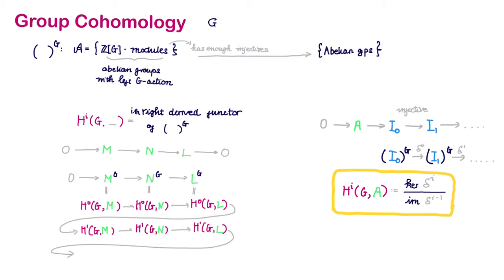Here again, it's why it's good to view the category of abelian groups with left G-action as the category of modules over some ring.